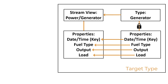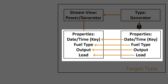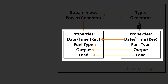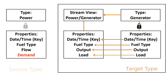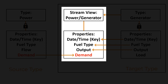A StreamView is an object based on a target type with the same properties of that target type. You can select properties to map into StreamViews from a source type, thus creating a virtual type with a mix of selected properties from both. Such a virtual type is called a StreamView.